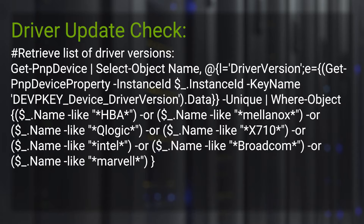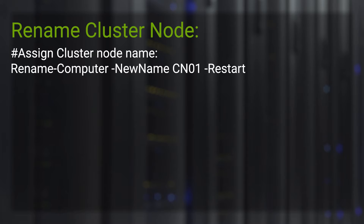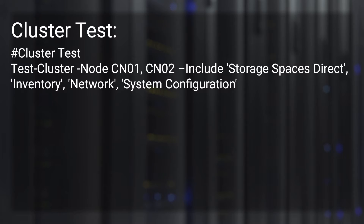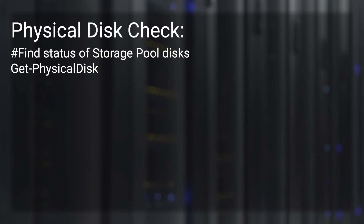Anything highlighted in green has already been completed prior to the video. Another item already completed is the renaming of our cluster nodes. The next item we deal with is a cluster test, which is a validation — we're going to test our cluster nodes, check the environment for storage spaces direct, and ensure everything is set for a cluster install. Following validation, we'll take an inventory of the physical disk using the Get-PhysicalDisk command.